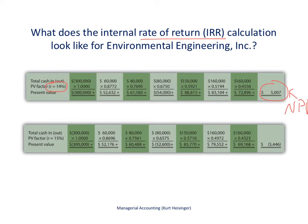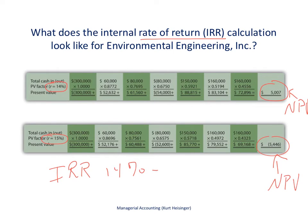This is done through trial and error — we move the rate up because that will push the present value down, since there is an inverse relationship between the rate and the net present value. Moving the rate to 15% gives us a negative net present value. That tells us the internal rate of return is between 14% and 15% — very close to about 14.5%. Since the company's required rate of return is 12%, this proposal exceeds the hurdle rate and we would accept this long-term proposal.